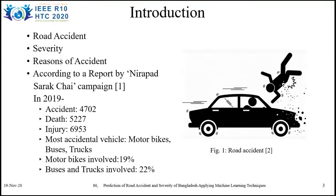Road accidents are accidents on the road that can involve two or more vehicles or pedestrians. This type of accident usually causes injury to one or more people. Severity means the loss which occurs to a person or object, measured when an accident happens and causes damage. There are many reasons for road accidents, but the most common reasons are drunk driving, distraction to the driver, avoiding safety gear, over speeding, and overtaking at turning points of the road.